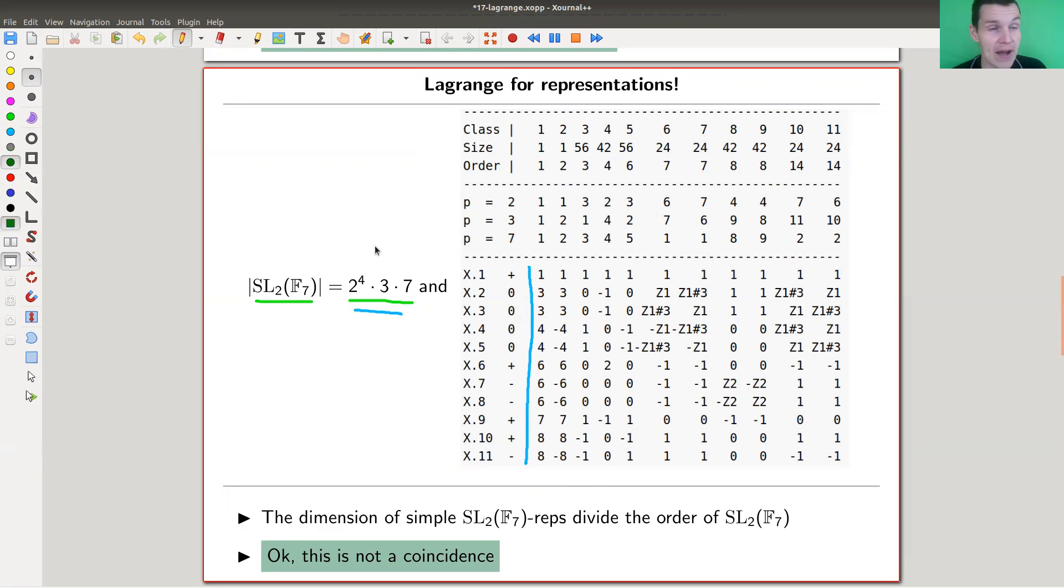And now actually really a miracle happens. For example, there is no five here, so five doesn't divide this number, obviously. And indeed, there is no dimension five representation, which now you might believe is not a coincidence anymore. And all of those representations, eight divides this number, of course eight goes very nicely here into two to the four, six, two times three, seven, seven appears and so on.